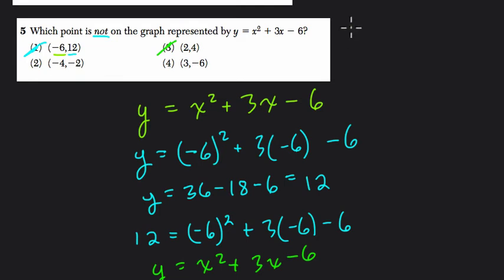Choice 2, negative 4 and negative 2. So y equals x squared plus 3x minus 6. We take x and we square it. So negative 4 squared is 16. Minus 6 minus 6. Because 3 times, oops, not minus 6 minus 6. 3 times negative 4 is negative 12. So instead of plus 12, it's minus 12 minus 6.